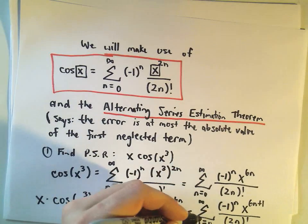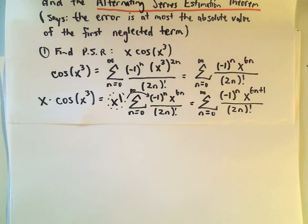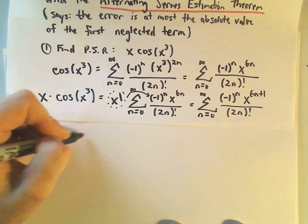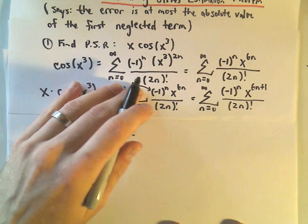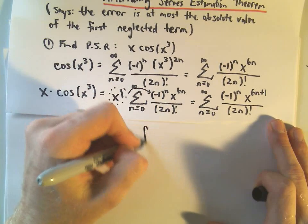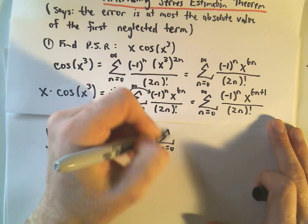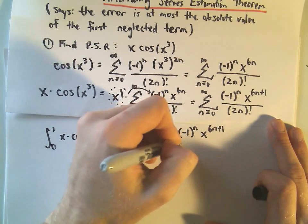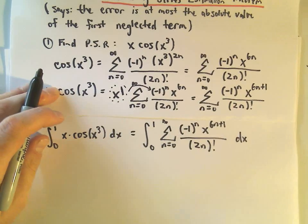This is the useful part, because this power series is what we're going to be integrating. We wanted to compute the definite integral from 0 to 1 of x times cosine x cubed dx, but what we're going to do instead is integrate its equivalent power series representation. So we'll integrate from 0 to 1 of the summation from n equals 0 to infinity of negative 1 to the n, times x to the 6n plus 1, all divided by 2n factorial, with respect to x.